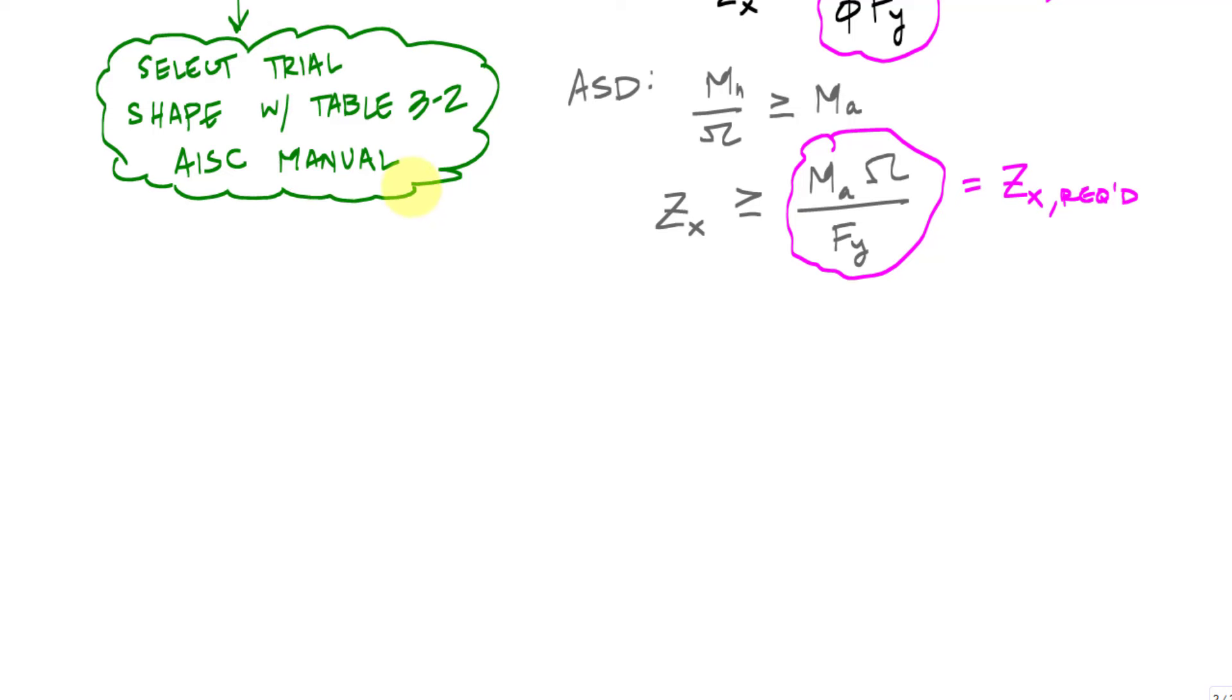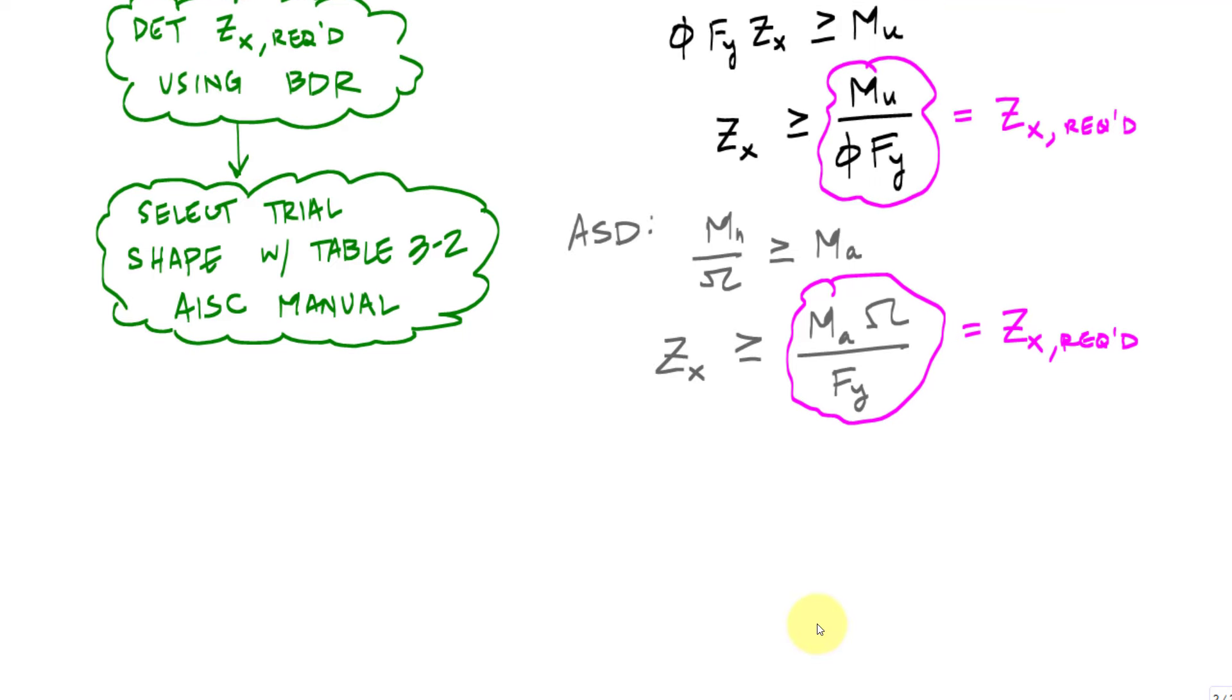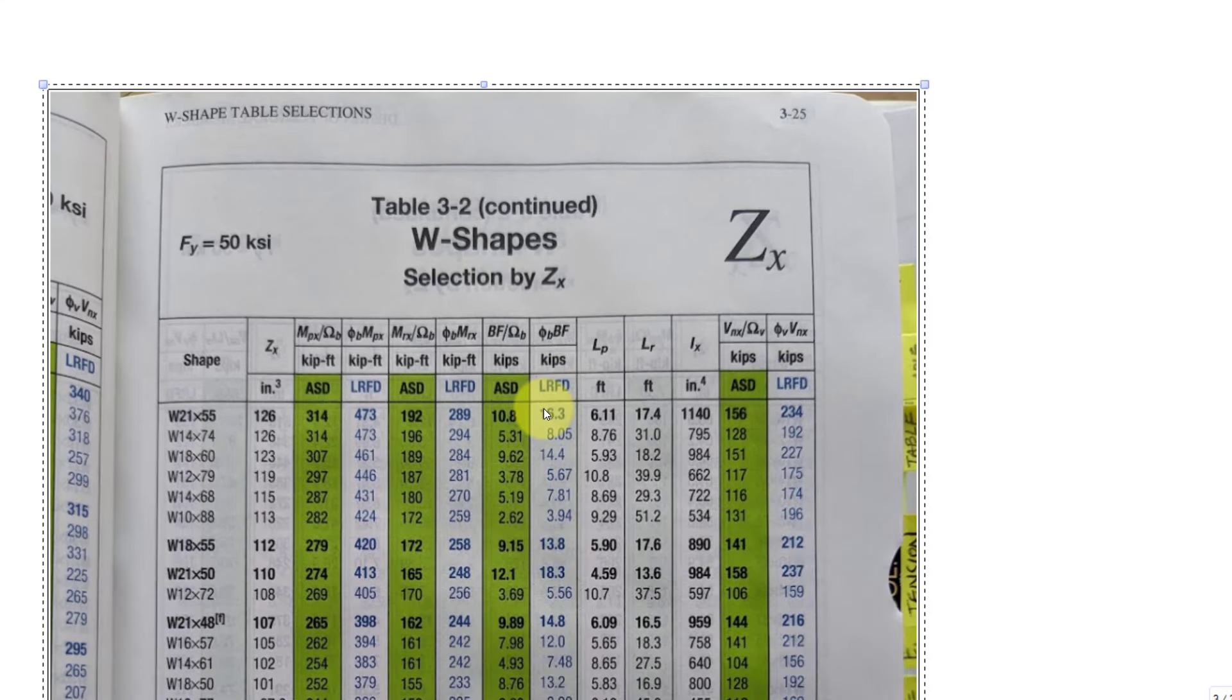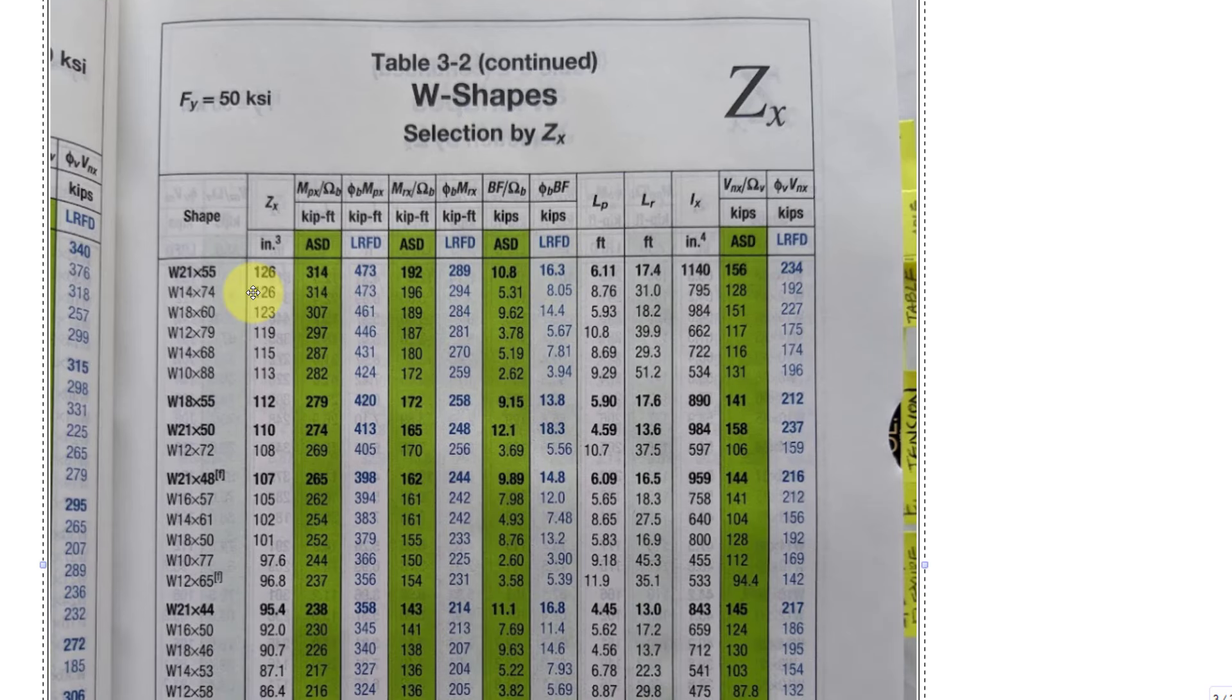So hopefully you have the AISC manual. Please go buy one. I took a picture of a page of my AISC manual. Please AISC, don't hurt me. Here, check it. This is what table 3-2 looks like. It's freaking awesome. Table 3-2 for wide flange shapes ordered essentially by the plastic section modulus for bending about the strong axis.